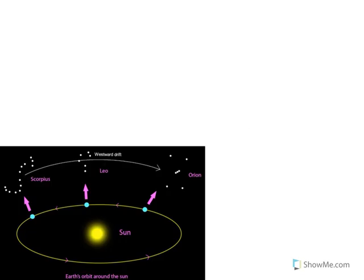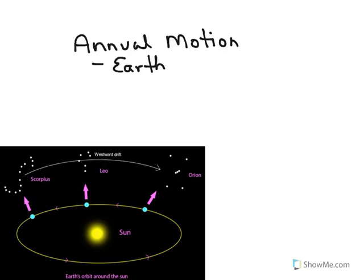The next motion has to do with Earth's orbit around the Sun. This is called annual motion. Annual means once a year, and that's because Earth orbits the Sun in one year.